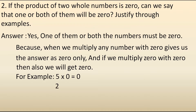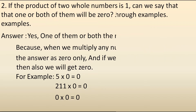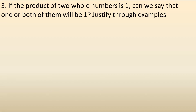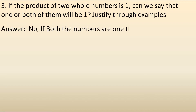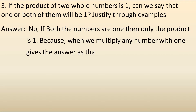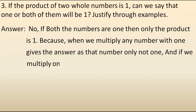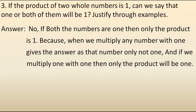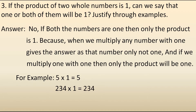Let's take one more example: 211 into 0 also gives 0. Now let's move to the third question: if the product of two whole numbers is 1, can we say that one or both of them will be 1? The answer is no — both numbers must be 1. Multiplying any number with 1 gives the same number, not 1. Only 1 into 1 gives 1. For example, 5 into 1 is 5, and 234 into 1 is 234. But 1 into 1 gives 1.